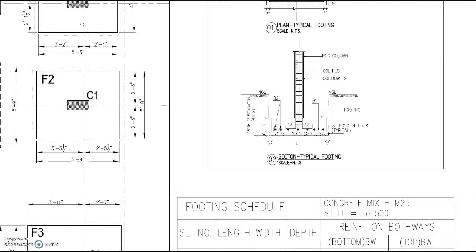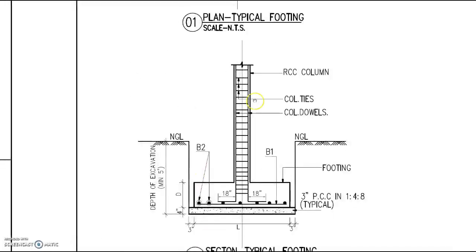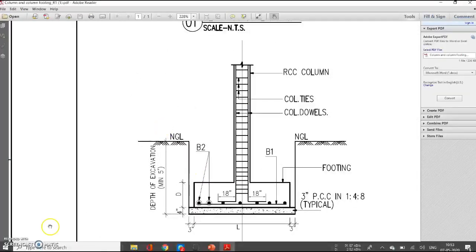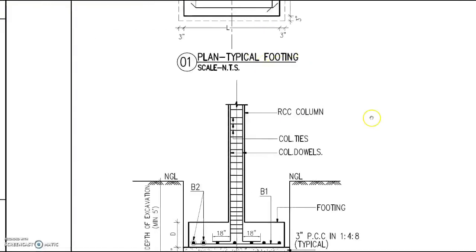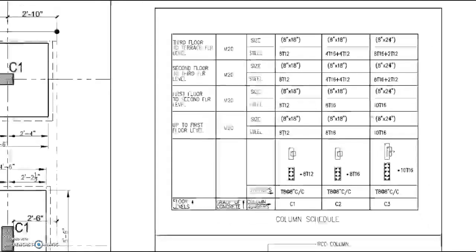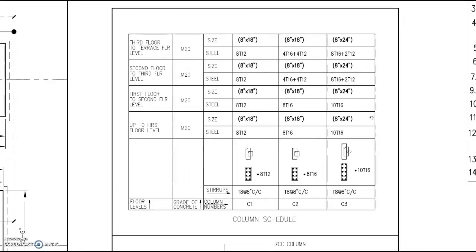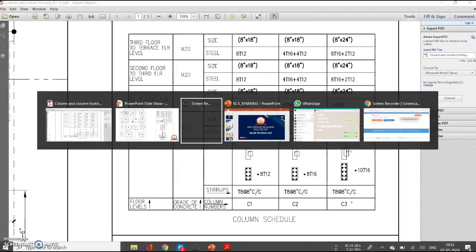The depth of excavation will be given in this drawing. In the typical cross-section drawing, they have mentioned the depth of the footing. In the structural drawing, they have given the grouping of columns — C1, C2, C3. Now we will go back to marking.